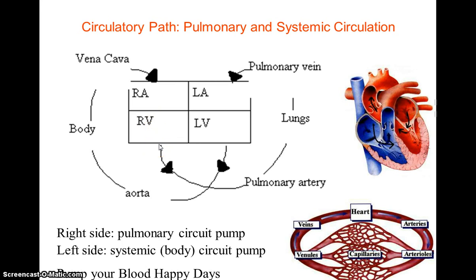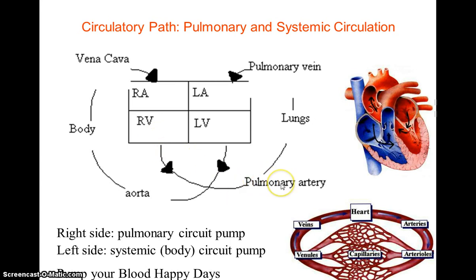The artery that carries blood from the right ventricle is the pulmonary artery, and at the base of the pulmonary artery is the pulmonary valve. Pulmonary is a root word that pertains to the lung, so the pulmonary artery carries blood away from the heart to the lungs.